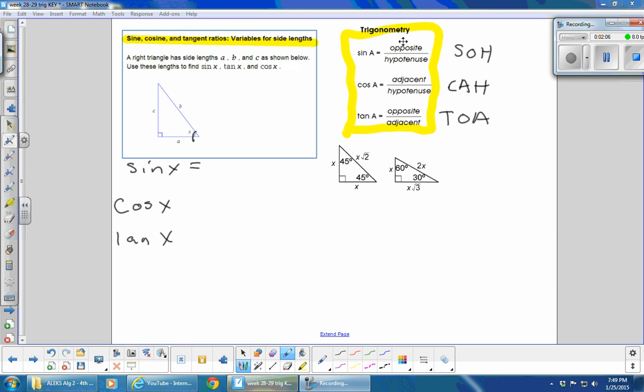For sine, you'll go back to the SOH, which means opposite over hypotenuse. Opposite in our case is C, so that's going to be C divided by hypotenuse. Hypotenuse is B, so B. C over B is your answer.